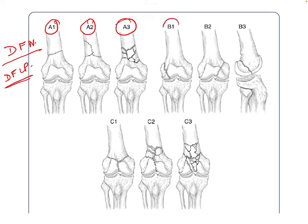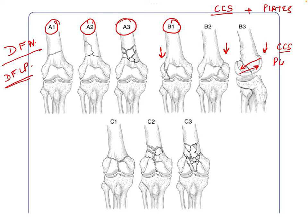For partial articular Type B fractures, we can use cancellous cannulated screws, or supplement with locking plates. In B1 we can use a lateral plate, in B2 a medial plate, and in B3, depending upon the size of the fracture, we can use screws from anterior to posterior or posterior to anterior, and supplement with a plate on the posterior surface depending on the fragment size.